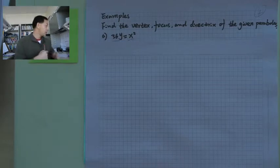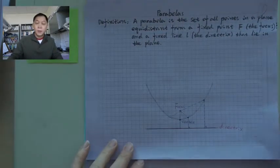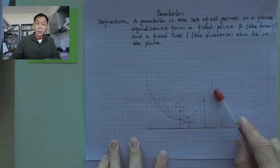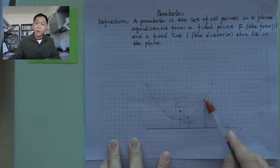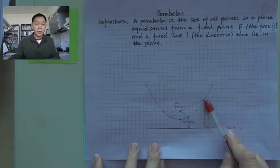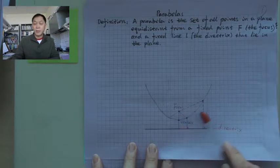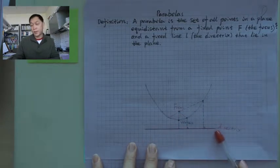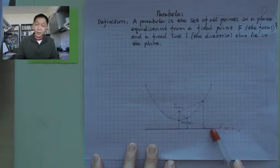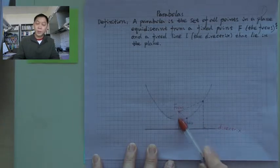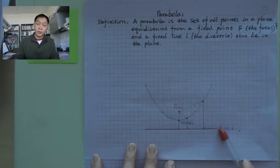Before we do that, we need to recall that the definition for the parabola is the points on the parabola are equidistant from the focus and the directrix. So those two things are given: focus and directrix. Then, of course, the distance between focus and directrix is also given.